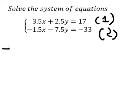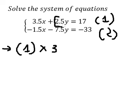For equation number one, we need to multiply by three because 2.5 multiplied by three gives us positive 7.5, and then we can cancel this one.